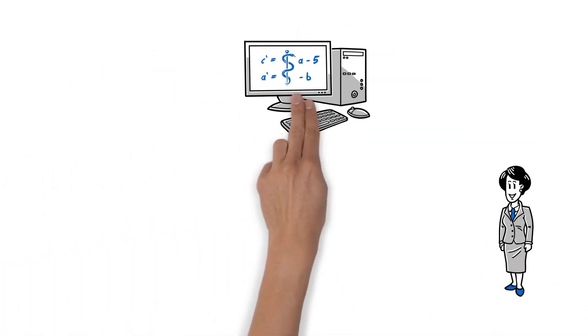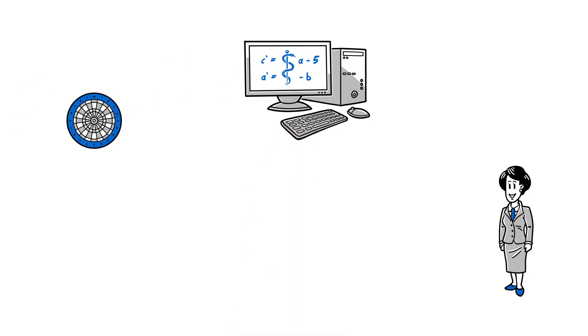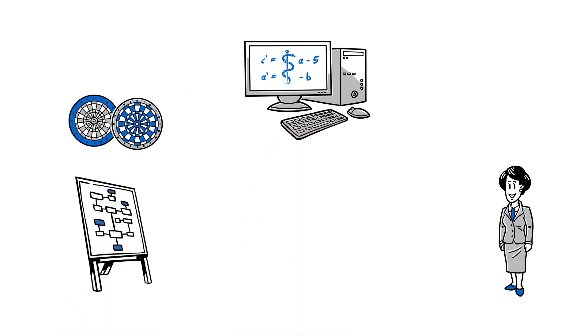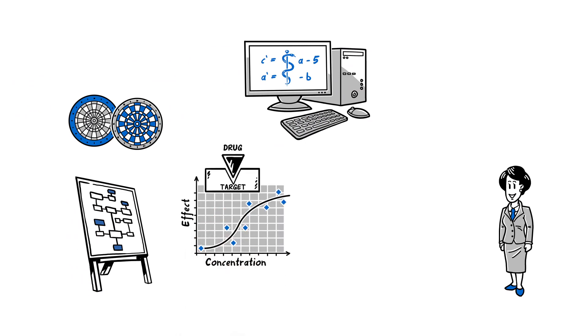Annie explains that disease models often incorporate multiple targets and pathways, allowing them to tackle questions such as what level of target engagement will result in meaningful changes in biomarkers and clinical endpoints over time.